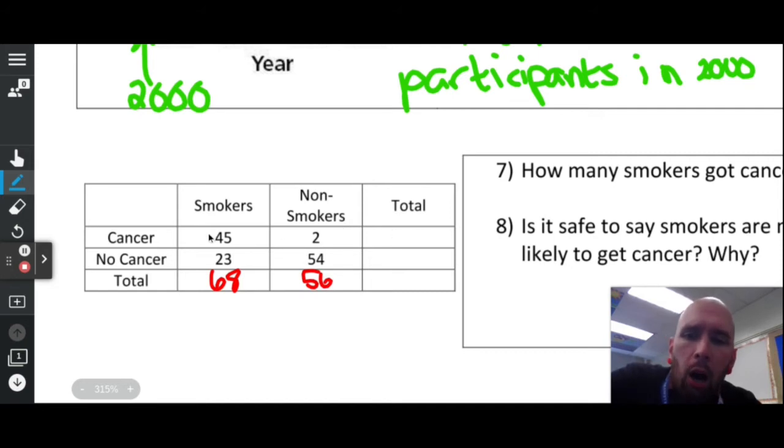In order to find how many total people had cancer we do 45 plus 2 which is 47. In order to find out how many total people didn't get cancer, that's 23 plus 54 is 67. My total total, total people, could be found by either adding these two or adding these two. Either way we're going to get 114.